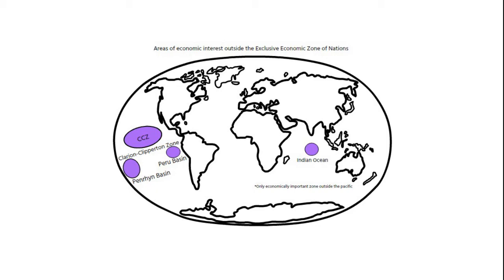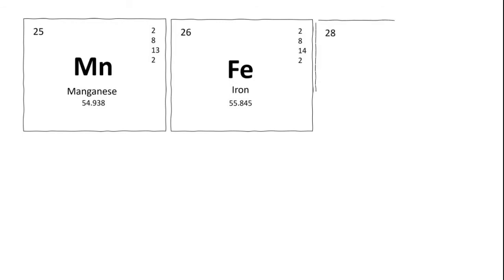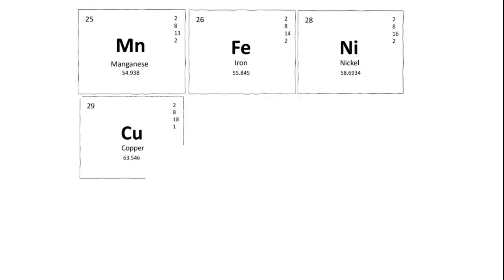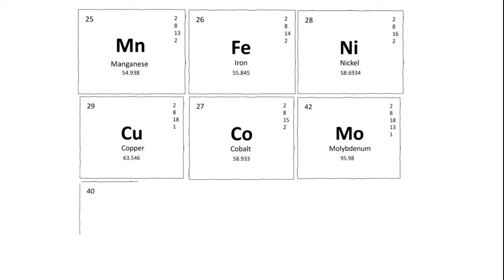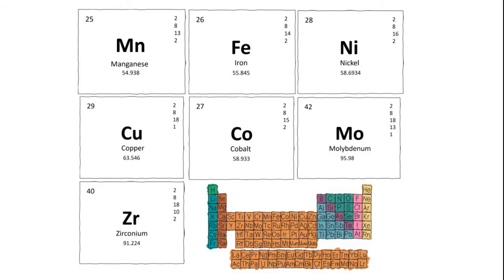The composition of nodules varies with their environment of formation, but in addition to manganese and iron, they can contain nickel, copper and cobalt, as well as traces of other valuable metals such as molybdenum, zirconium and rare earth elements.